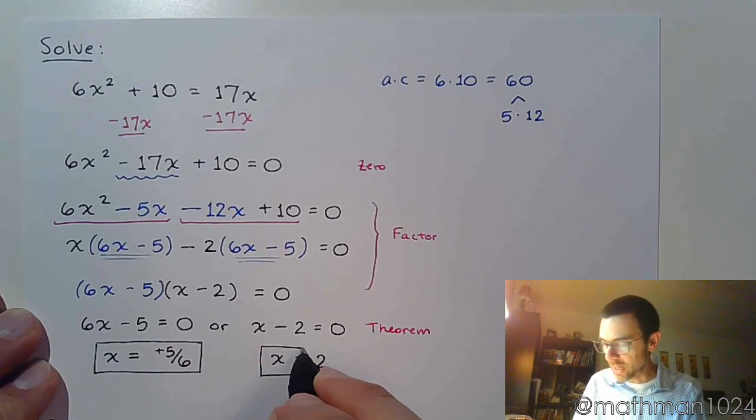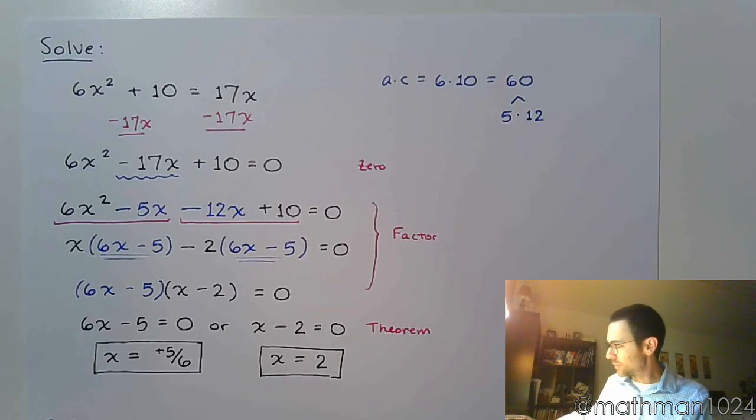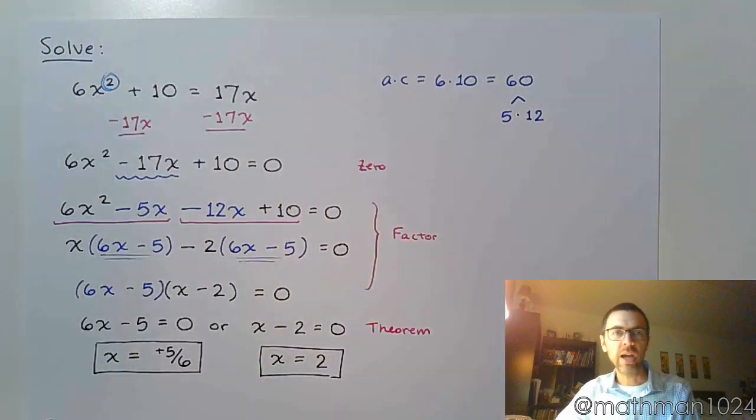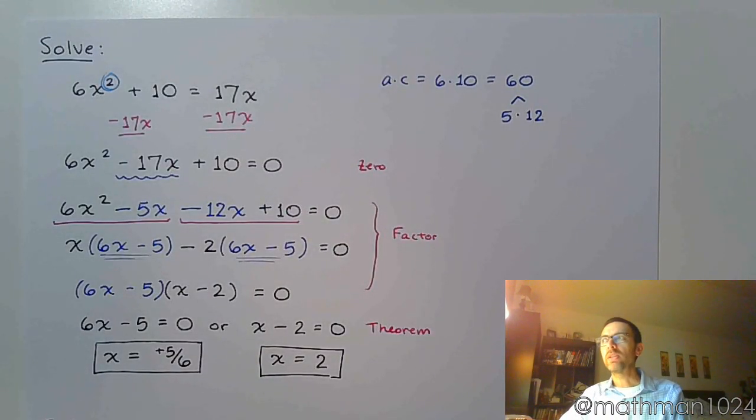Now we knew we were going to have two solutions because of that guy right there. That is the highest power that we see, and since this is a polynomial equation, that tells us how many solutions we can expect to have. So we expected two, we got two, so we should be feeling pretty good about that.